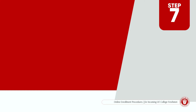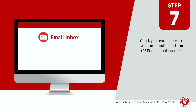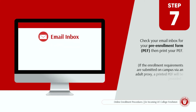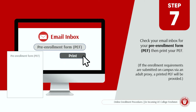Step 7. Check your email inbox for your Pre-Enrollment Form or PEF, then print your PEF. If the enrollment requirements are submitted on campus via an adult proxy, a printed PEF will be provided.